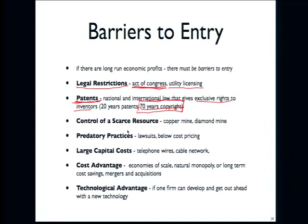Other really big barriers are controlling scarce resources — there are a couple of big companies that mine copper, gold, diamonds. At one point the De Beers diamond mines in southern Africa controlled almost the world's supply of diamonds. The De Beers company hired advertisers and said every person in America when they get married will have a diamond engagement ring — they invented this idea and sold it to Americans. A corporation that controlled the world's supply of diamonds convinced people that this was true. Another big one is predatory practices — pricing below cost, coming in and shutting down smaller companies, like Walmart moving into rural America.